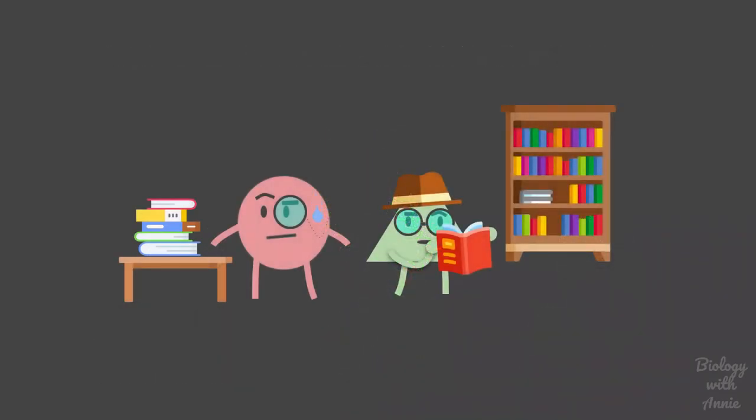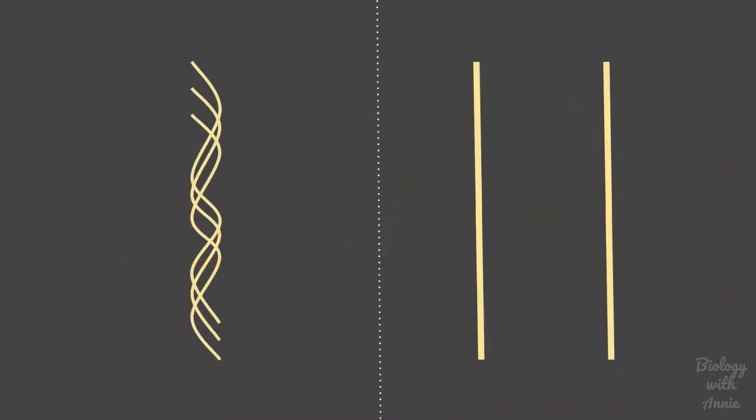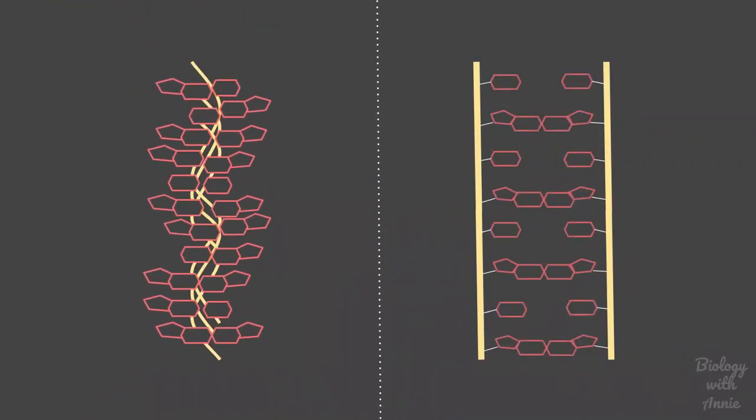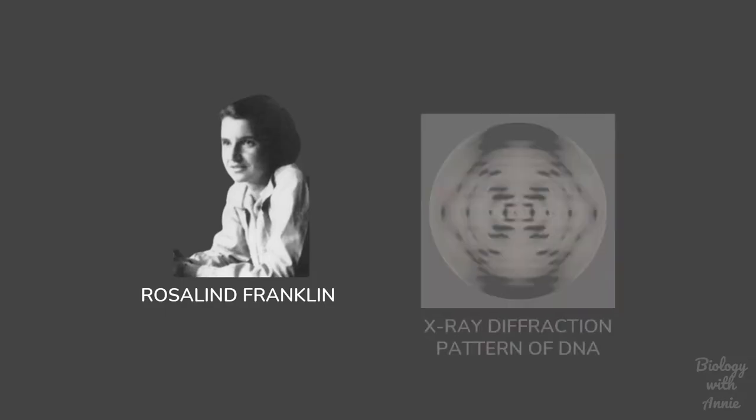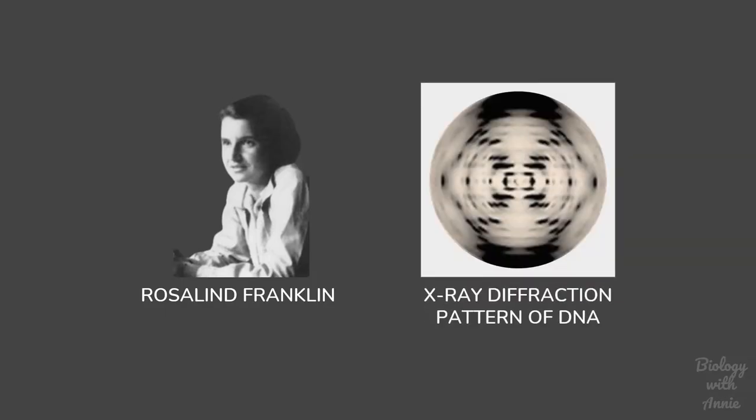Watson and Crick tried to understand how the nucleotides are assembled in DNA by applying the laws of structural chemistry. But this proved to be a very challenging task. After multiple failed attempts, they decided to abandon the project until in 1952, Rosalind Franklin, a British chemist, produced a high-resolution X-ray diffraction image of DNA.